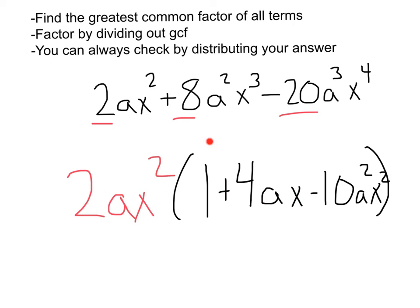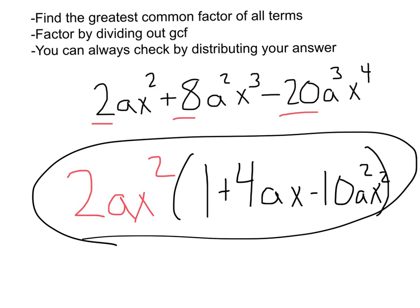Lastly, we've got minus 2 times 10, 20. a times a squared is a cubed. x squared times x squared is x to the fourth, golden. B-E-A-utiful.